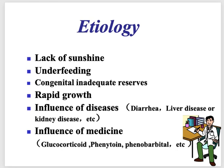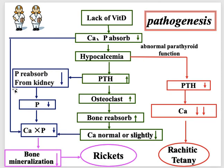When parathyroid hormone is released it normalizes serum calcium levels, but it takes the calcium from the bones. Vitamin D deficiency — caused by lack of sunshine, underfeeding, rapid growth, diseases like diarrhea or liver disease, or medications like glucocorticoids, phenytoin, or phenobarbital — leads to decreased calcium and phosphate absorption, hypocalcemia, and increased parathyroid hormone. This increases osteoclast activity, calcium is drawn from bone, and bone mineralization decreases. Tetany can occur when there is hypocalcemia.